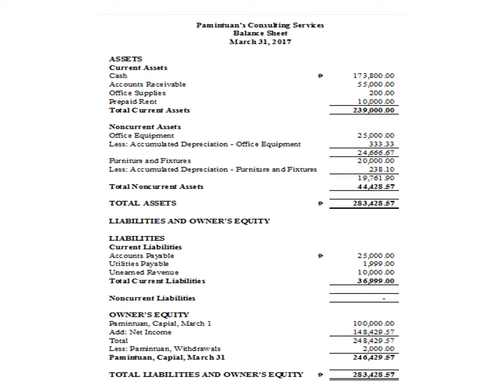This is an example of a balance sheet format. We have a heading — Paminto and Consulting Services — the name of the report: balance sheet, then the date: March 31, 2017. The date description is different from the income statement. In the income statement, you write 'for the month ended' because we are talking about a period of time — from a starting date to an end date. While in a balance sheet, all we have to do is the as-of date. So this is the report as of March 31.